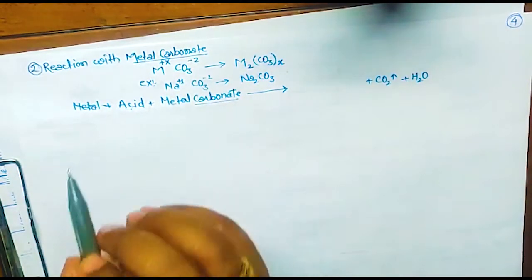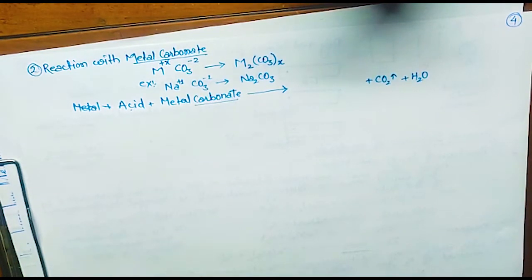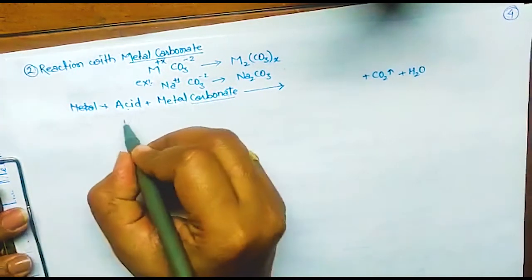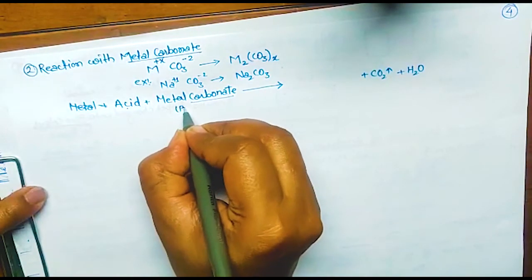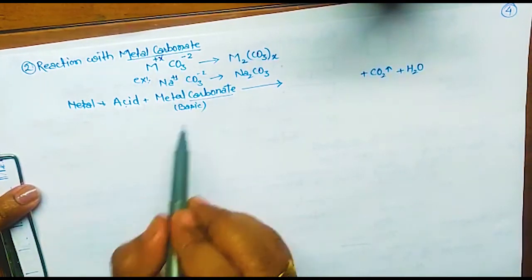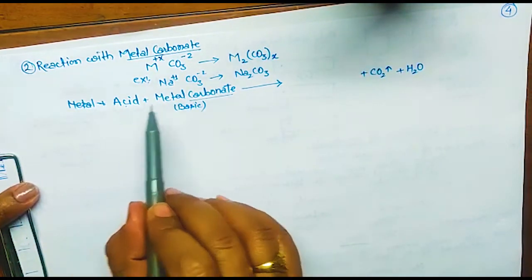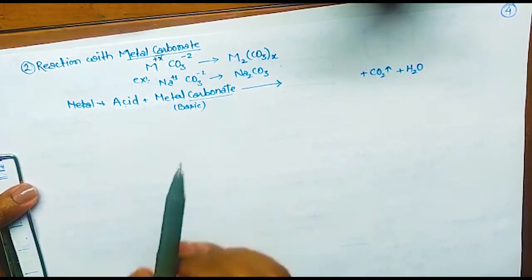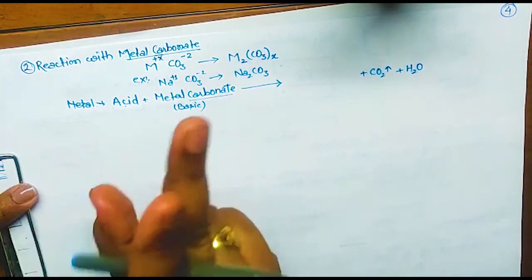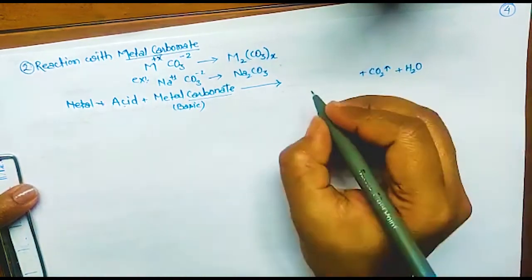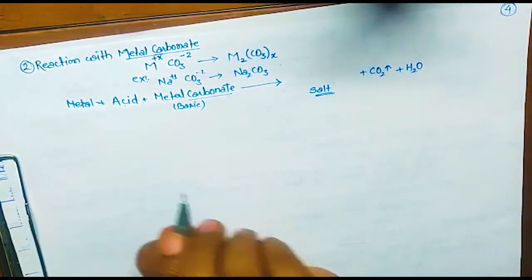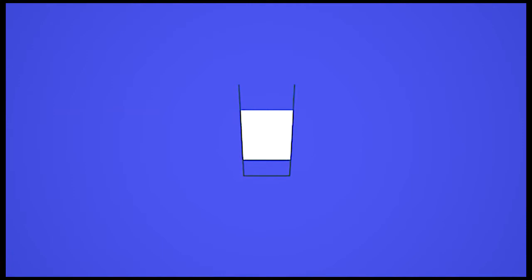One more important point: acid will never react with another acid. So if this reaction is happening, the metal carbonate must be basic. And since acid and base react with each other, they form salt. So whatever else forms in this reaction will be considered as salt.